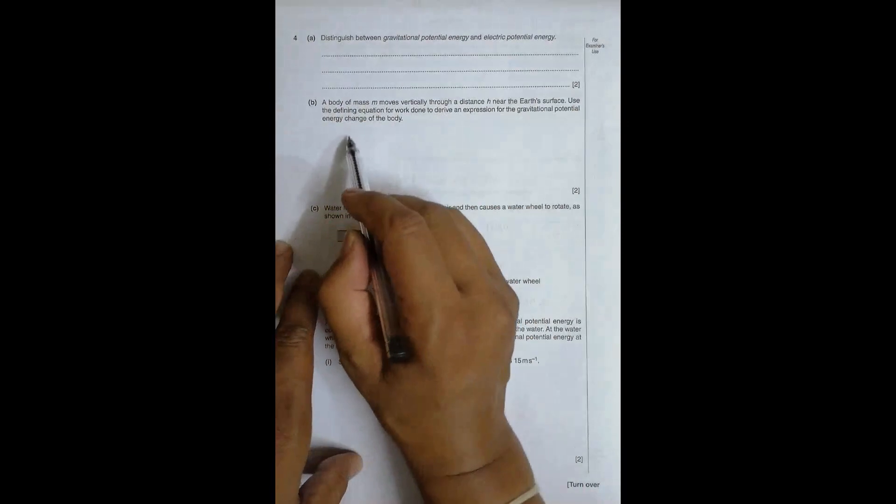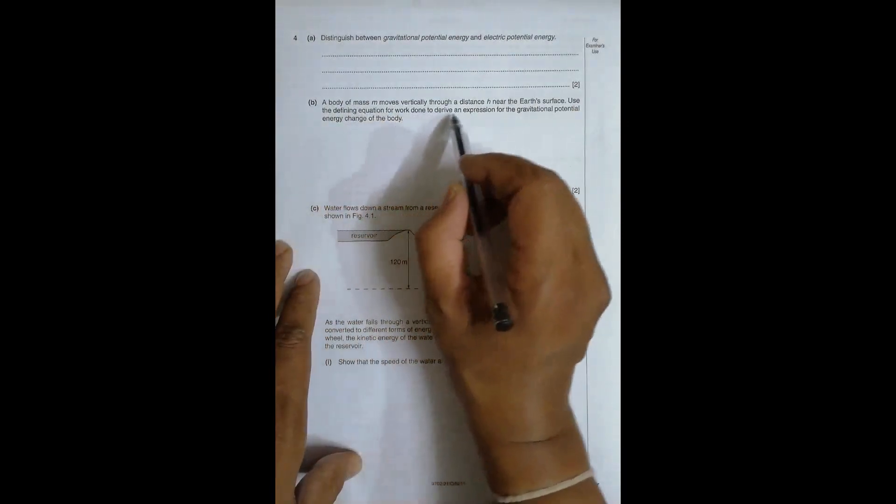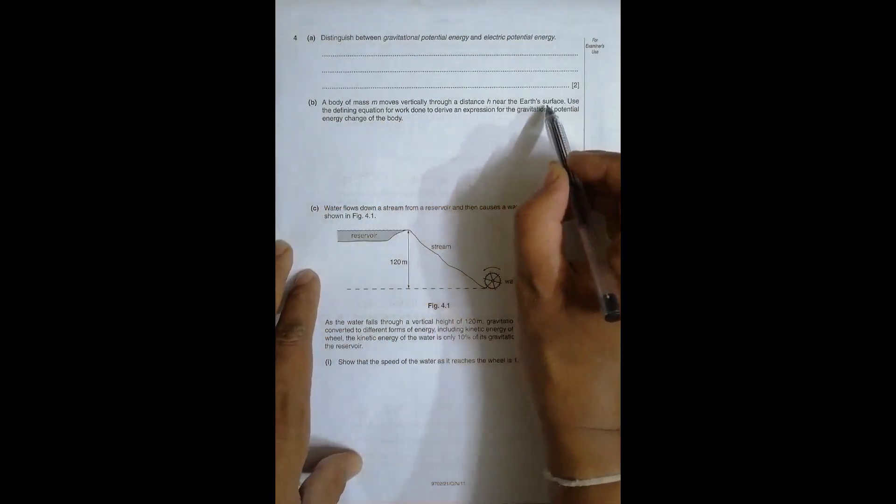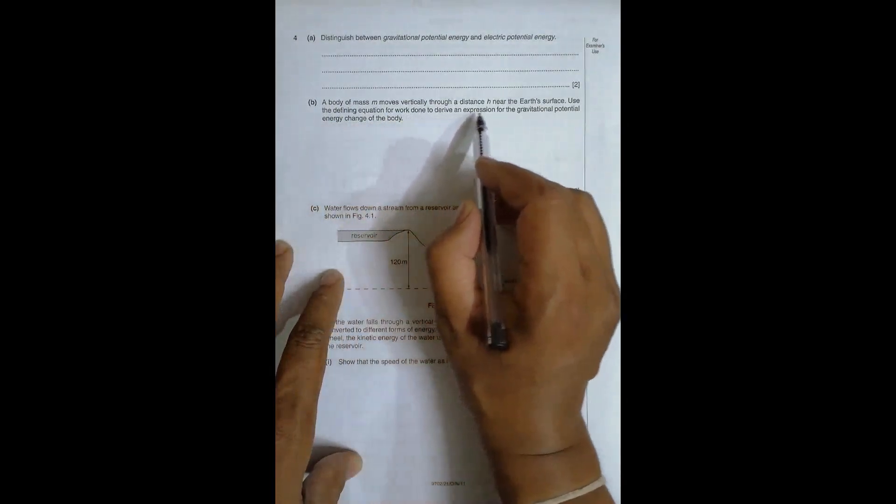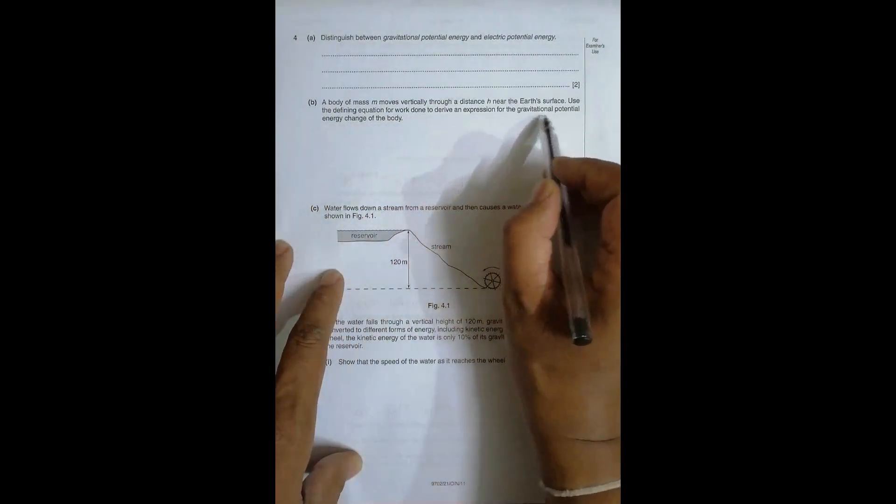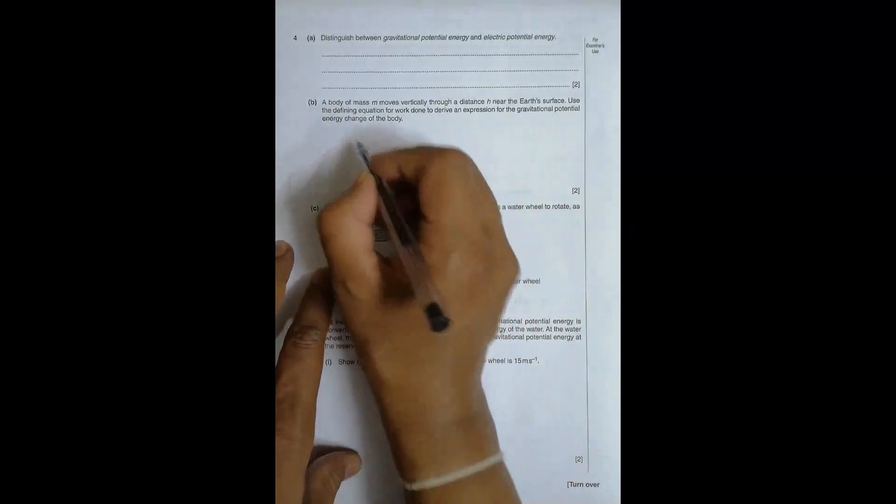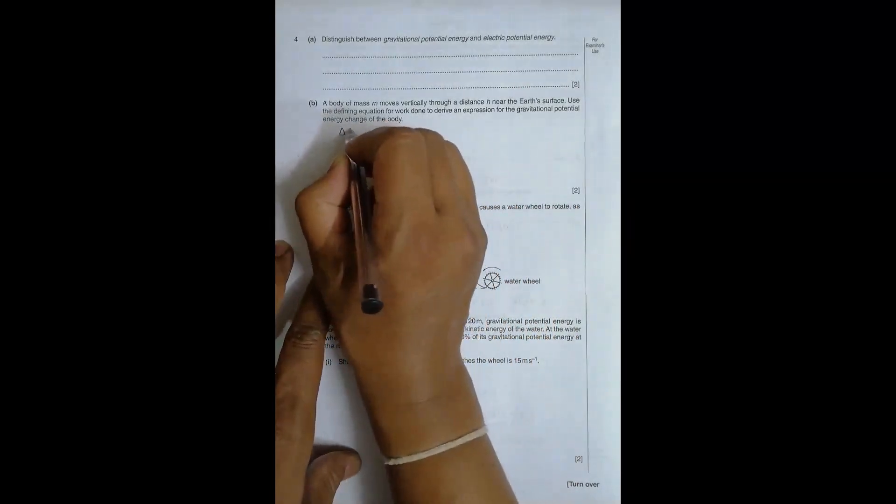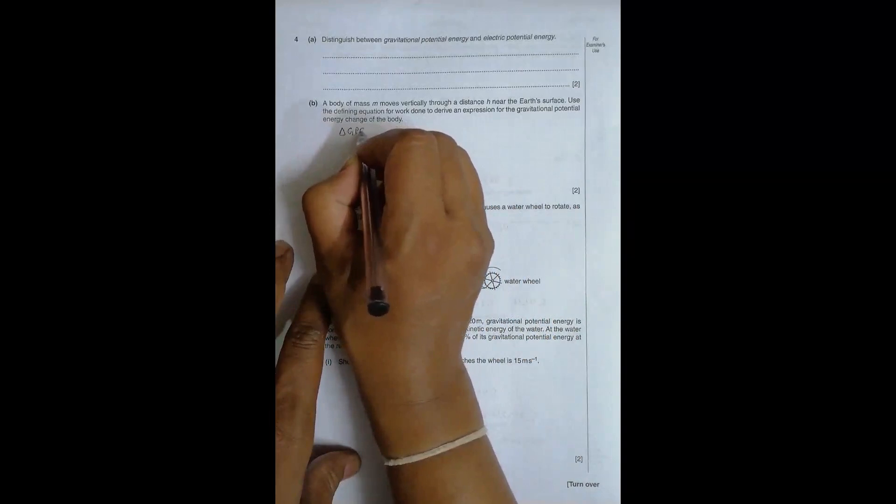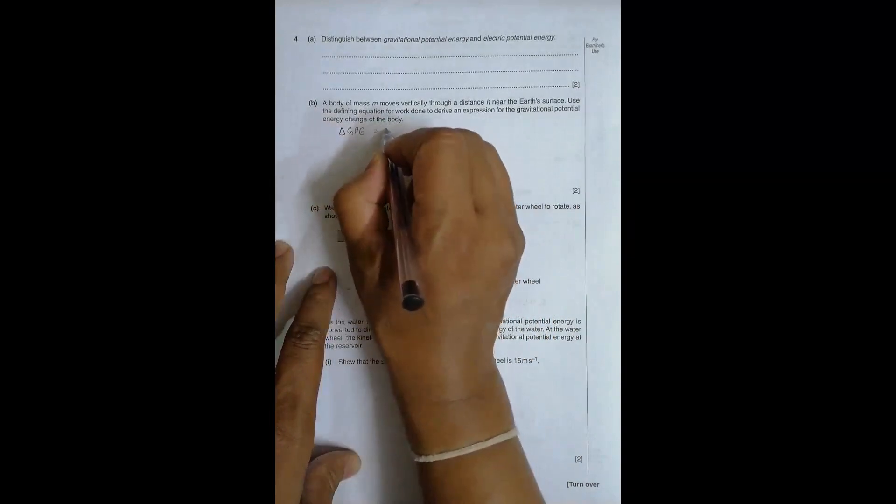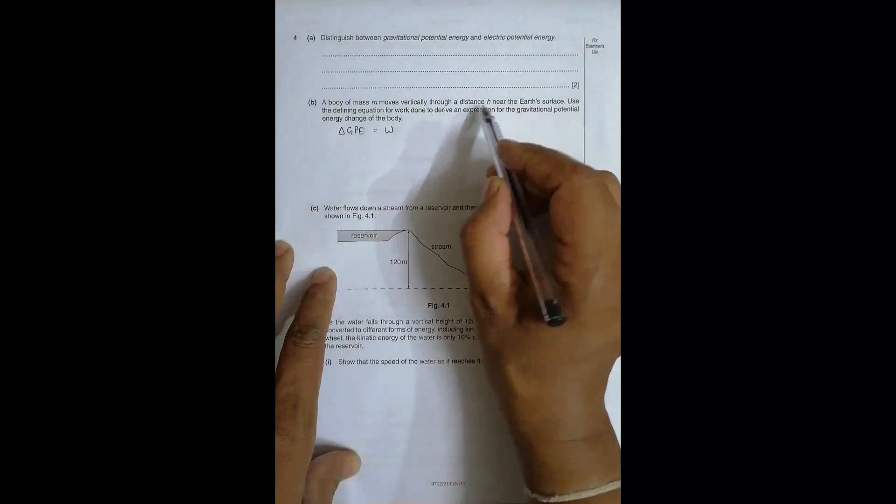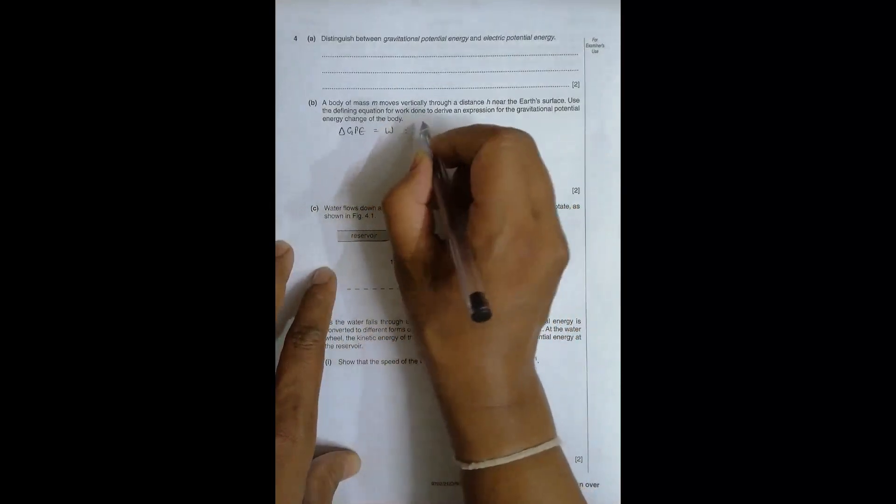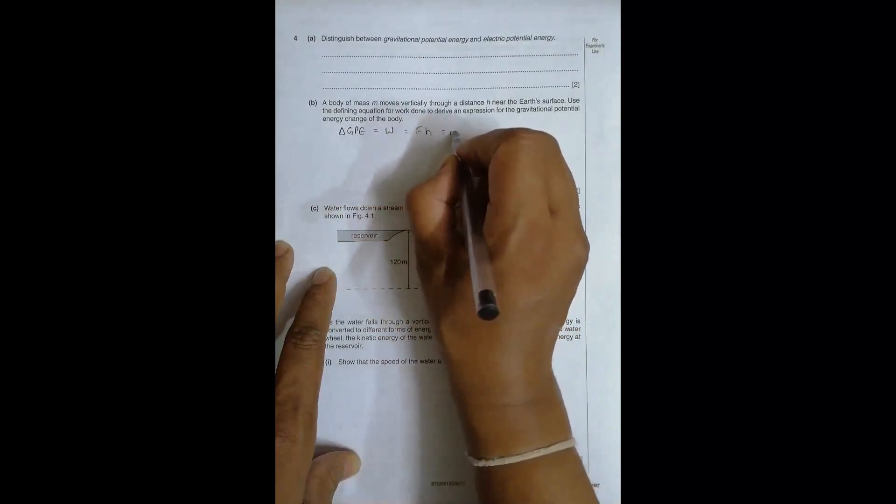So number b, a body of mass moves vertically through a distance h near the earth's surface. Use the defining equation for work done to derive an expression for the gravitational potential energy change of the body. So the change in gravitational potential energy should be equal to work done, work done by the system when it falls through height h.